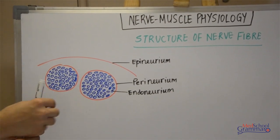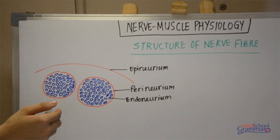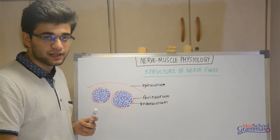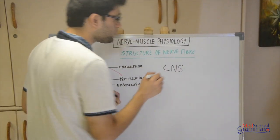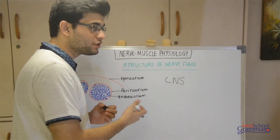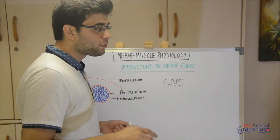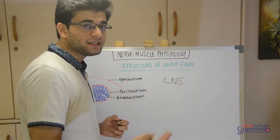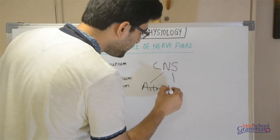Apart from neurons, there are certain supporting cells present in the nervous system. Depending on whether they are in the central or peripheral nervous system, they have different names. In the central nervous system, these are called neuroglial cells, whose basic function is to provide support and protection. The types found in the CNS are astrocytes and ependymal cells.